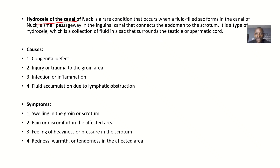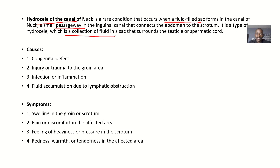Let's discuss this condition from the definition to the causes, symptoms, and treatment. The hydrocele of the canal of Nuck is a rare condition that occurs when fluid-filled sacs are formed in the canal of Nuck. The canal of Nuck is a small passage in the inguinal canal that connects the abdomen to the scrotum. It is a type of hydrocele, which is a collection of fluid in a sac that surrounds the testis or the spermatic cord.